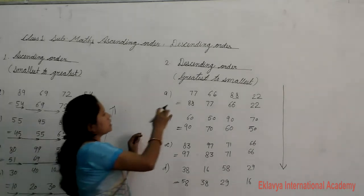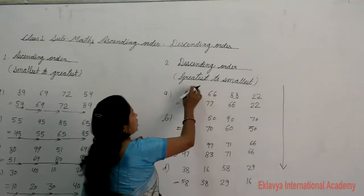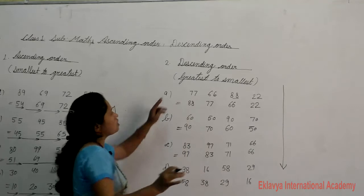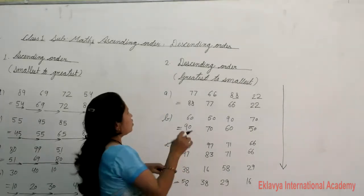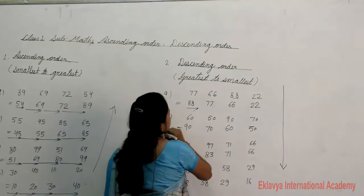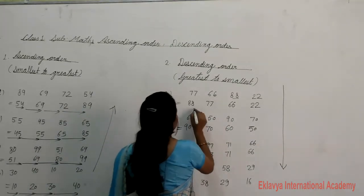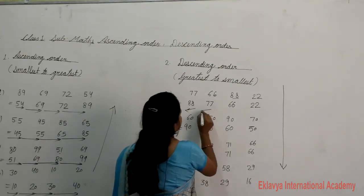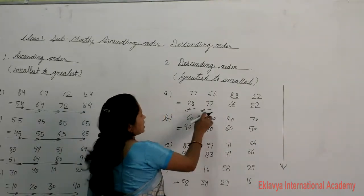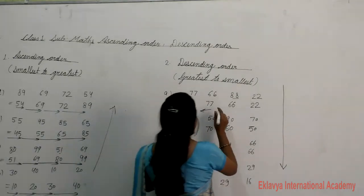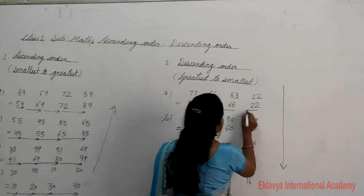Now for descending order, numbers are decreasing. We choose the greatest number first. Look there — the greatest number is 88. After 88 comes 77, then 66, then 22.